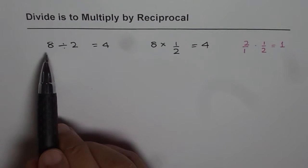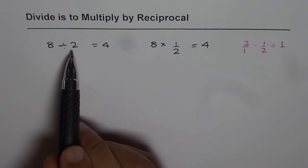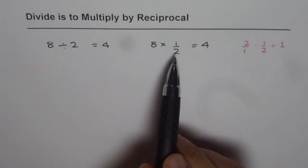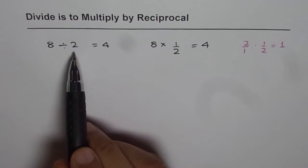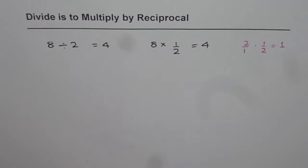So what we are saying here is, dividing by 2 is same as multiplying by half where half is a reciprocal of 2. Do you get the point? So that is what it is.